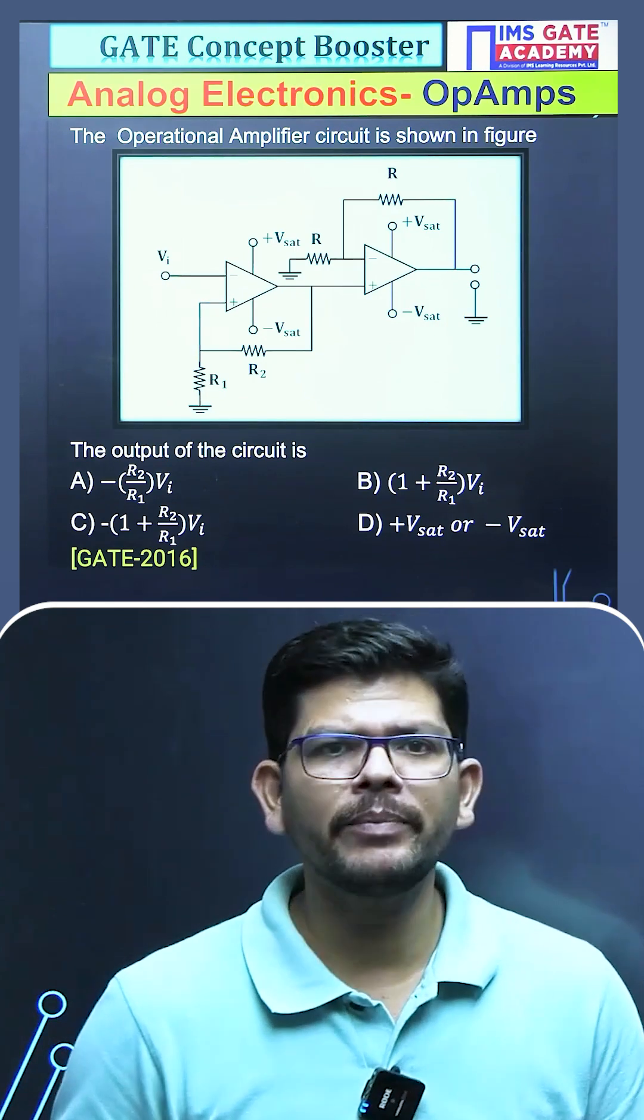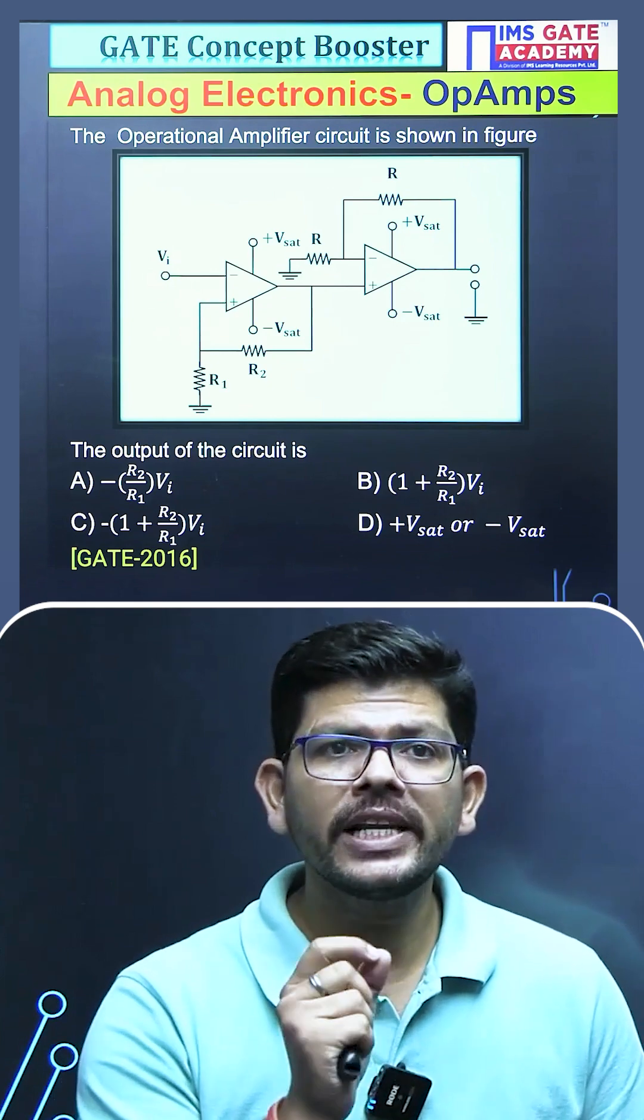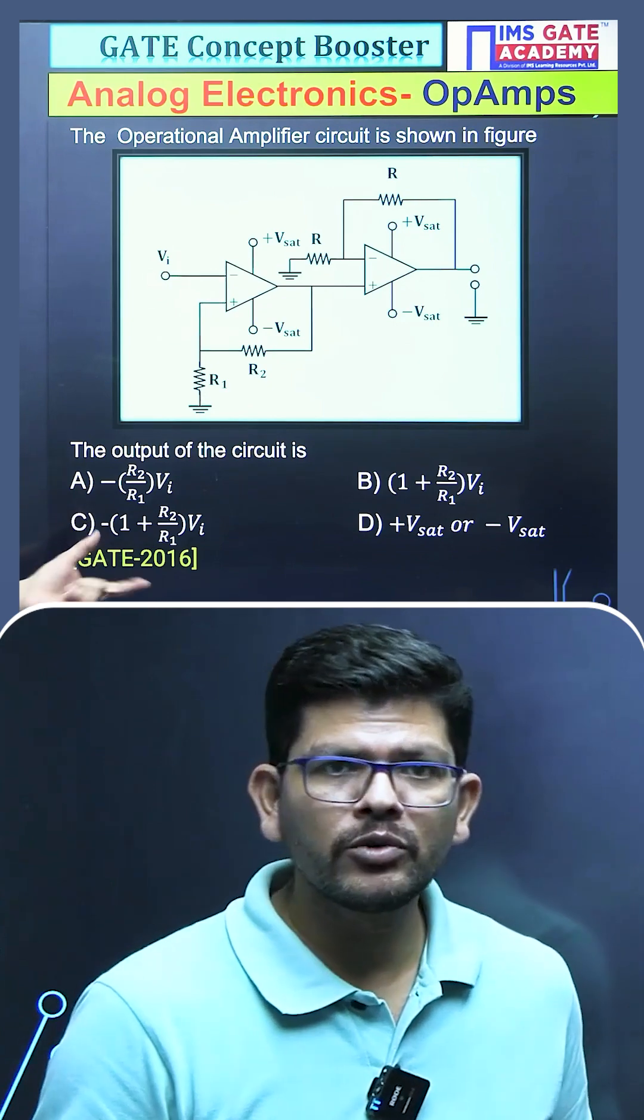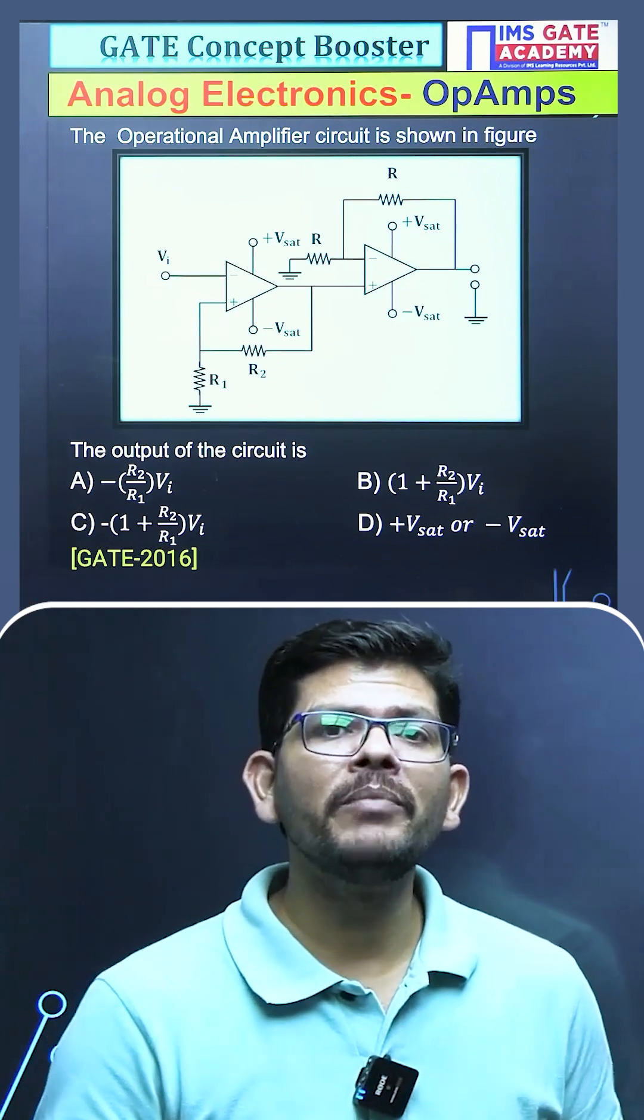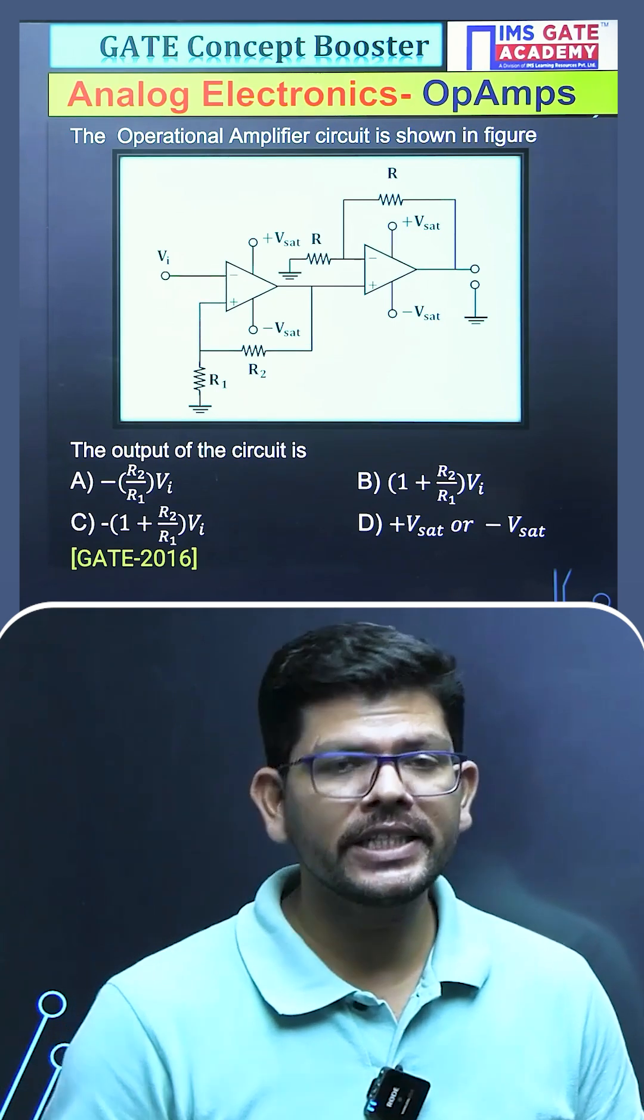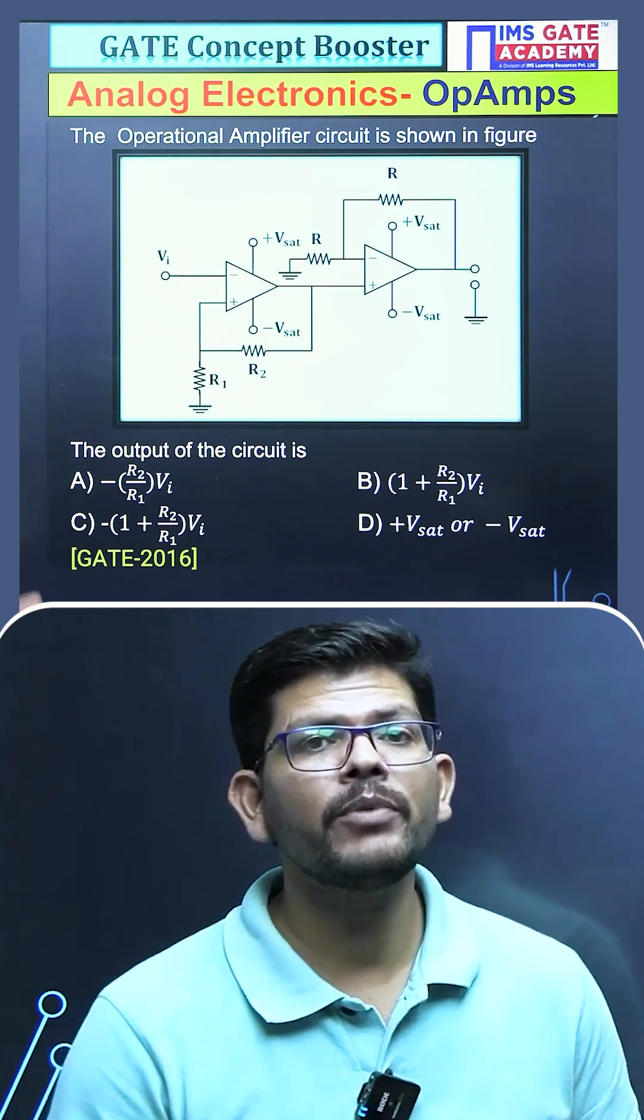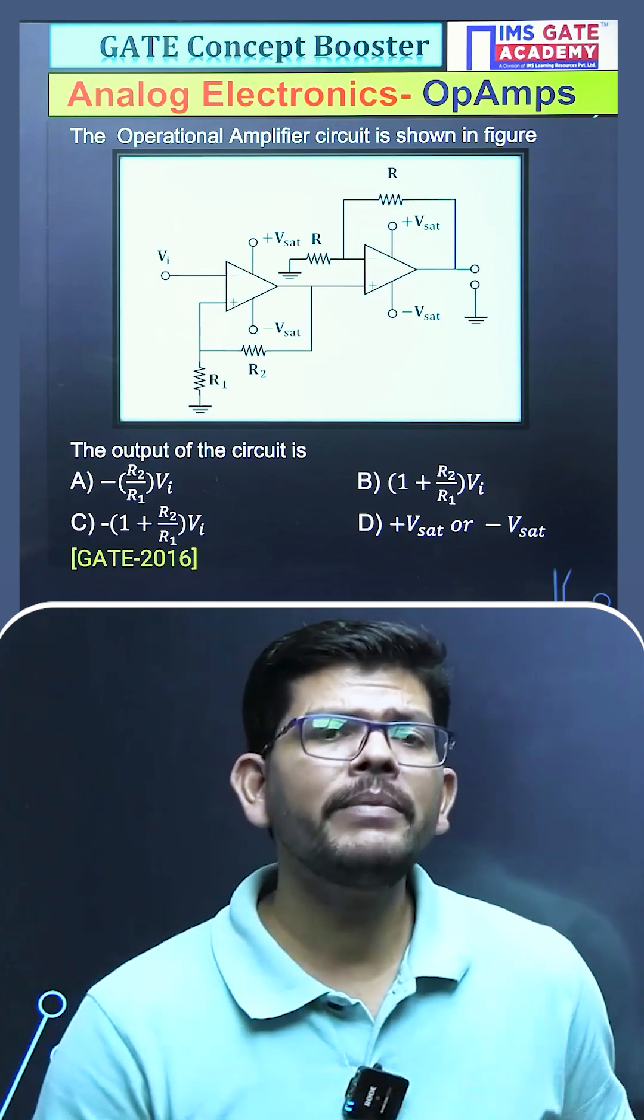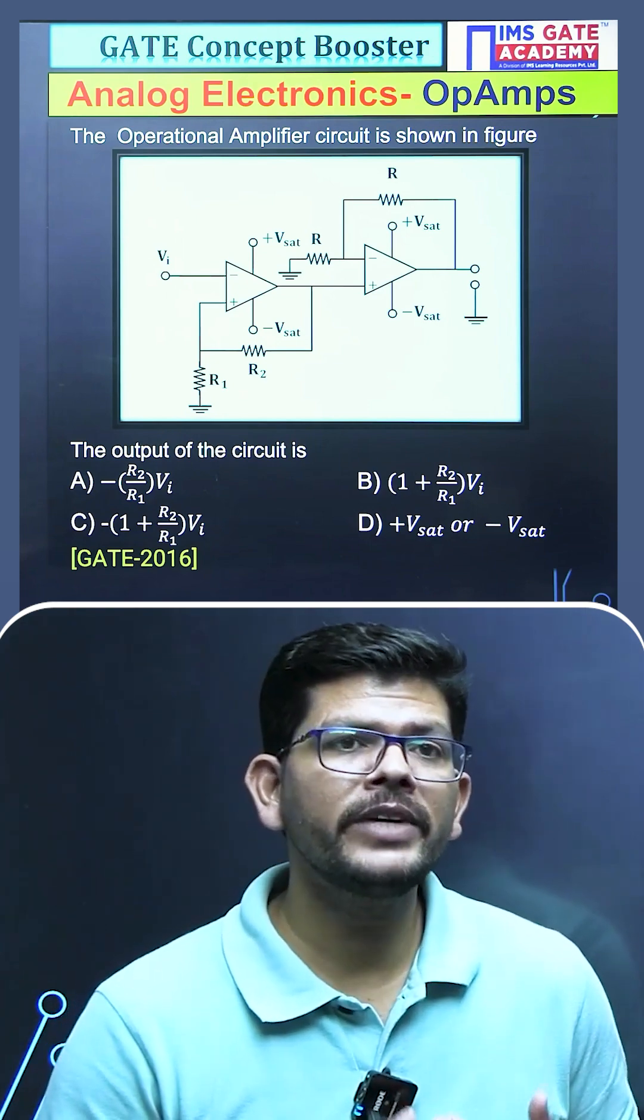Like we have in this question, which has a combination of two op-amps and was asked in the year 2016 electrical paper. This is a very important question for IN, EC students. We have been given a combination of two op-amps and we have to find the output at the second op-amp.